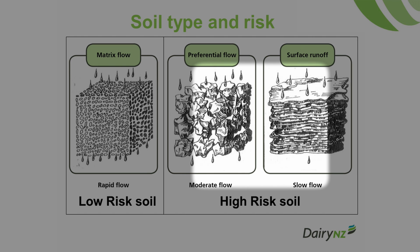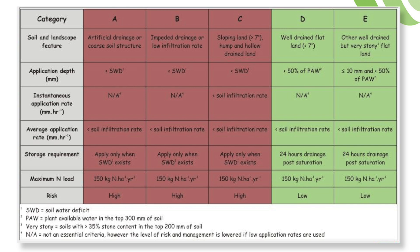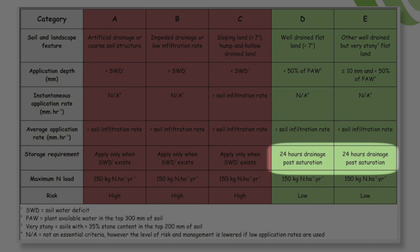Therefore, high-risk soils need a greater moisture deficit than the depth of effluent applied, and with generally very low evapotranspiration rates and higher rainfall during the winter months, large soil moisture deficits can be few and far between, giving little opportunity for effluent irrigation. Low-risk soils, however, only need to wait 24 hours post rainfall and soil saturation before we can apply effluent.